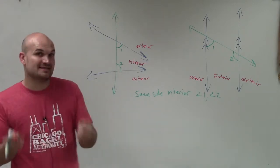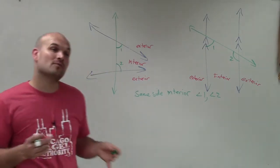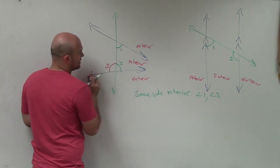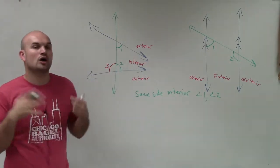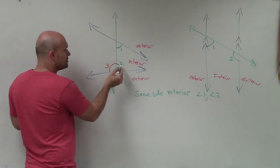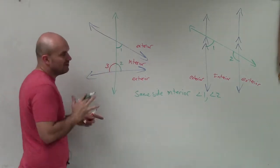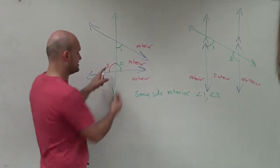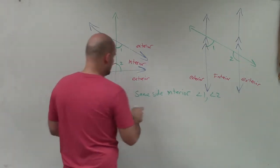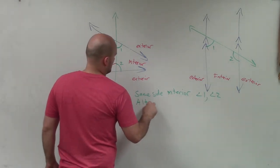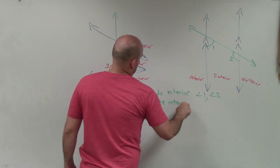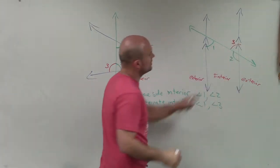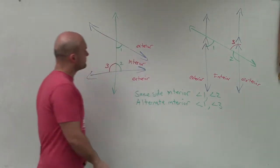We could also have angles on opposite, or alternating, sides. For example, angle one here and angle three over there — those are what we call alternate interior angles. You might say three and two are both interior and on opposite sides, but once we get into parallel lines you'll see why we call these alternate interior. These two make up a linear pair; we already have a name for those. But angle one and angle three are what we call alternate interior angles.